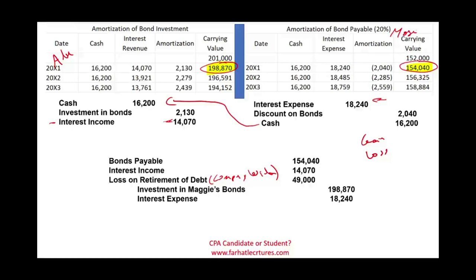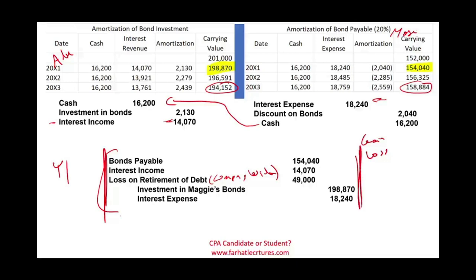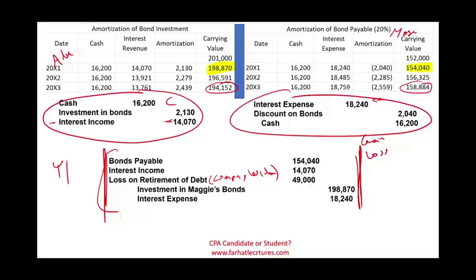The loss of $49,000 is company-wide — not reported on Adam's books alone, nor on Maggie's books alone. It appears on the consolidated financial statement. This is the straightforward consolidation entry for Year X1. Now, every time we consolidate, we must start back at the beginning because the consolidation is a worksheet — these entries don't go on either the parent or sub's books permanently.